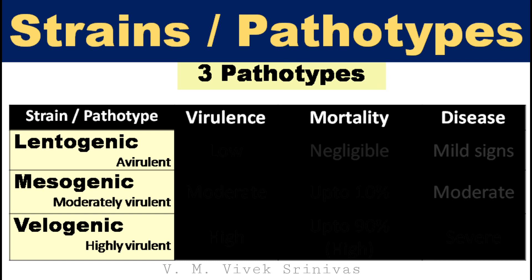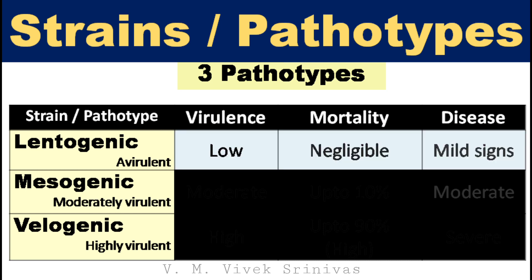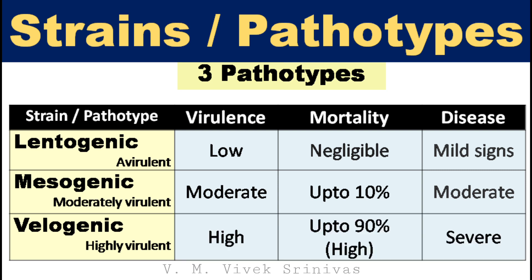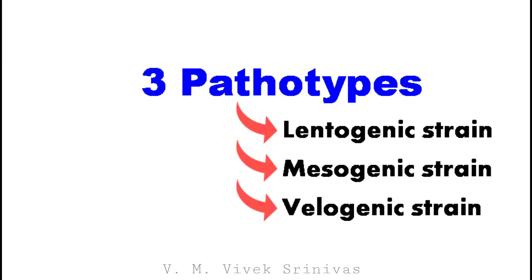Newcastle disease viruses are classified based on their virulence into 3 pathotypes or strains. Number 1: Lentogenic strain, whose virulence is low, causing very mild signs and negligible mortality. Number 2: Mesogenic strain, whose virulence is moderate, causing moderate disease signs and up to 10% mortality. Number 3: Velogenic strain, whose virulence is very high, causing severe disease and up to 90% mortality. So ND viruses are pathotyped based on their virulence into 3 pathotypes: lentogenic, mesogenic, and velogenic.